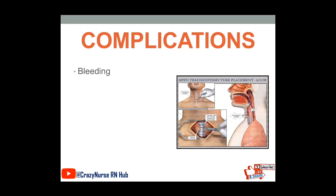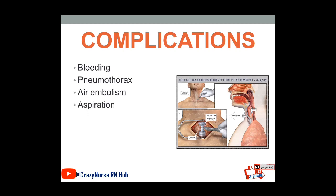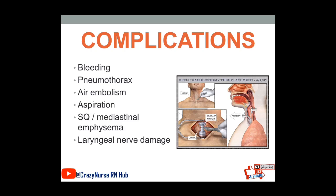We also have complications. First is bleeding. Second is pneumothorax. Third is air embolism. The patient might experience aspiration. The patient might develop subcutaneous or mediastinal emphysema. Laryngeal nerve damage may occur because of the surgical procedure. We also have posterior tracheal wall penetration, where the tracheal wall might be affected if it is mistakenly done during the surgical procedure.